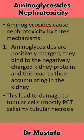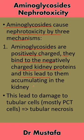Aminoglycosides cause nephrotoxicity by three mechanisms. The first is that they are positively charged and bind to negatively charged kidney proteins, leading to their accumulation in the kidney and ultimately causing damage.